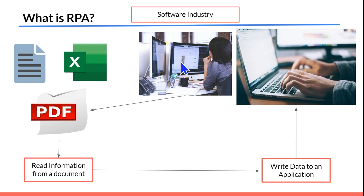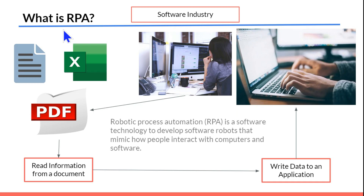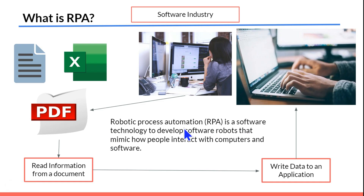Nowadays computers are being used everywhere; every small business has a computer and software. Anywhere people are doing repetitive tasks — and this is just one classic example — that's where robotic process automation comes into place. Robotic process automation is a software technology to develop software robots. For example, UiPath is such a software.